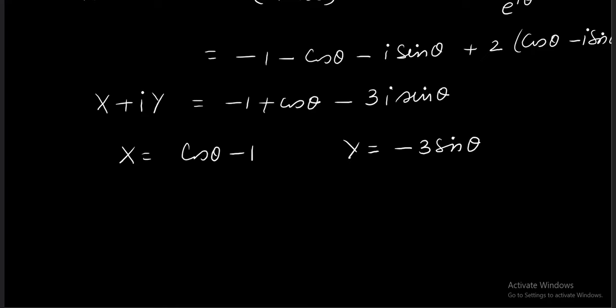So now you have to find the locus. What you have to do in the next step is try to get rid of this theta. And it's very simple. Sin theta cos theta I have highlighted. So what you actually have to do is X plus 1 whole square plus Y square upon 9 equals 1. This is the locus of omega.